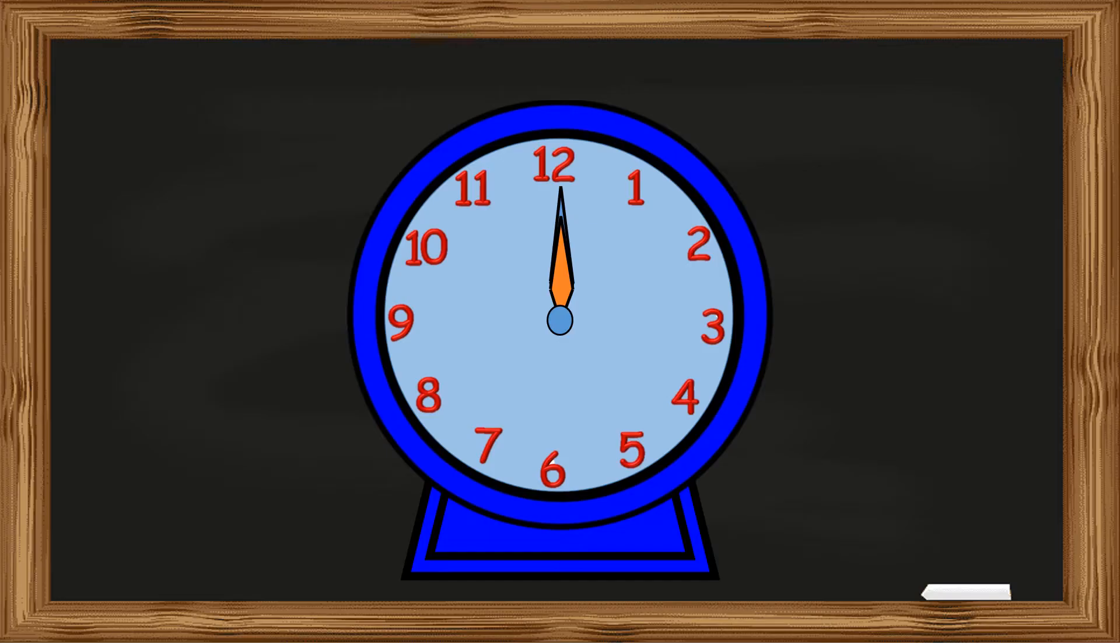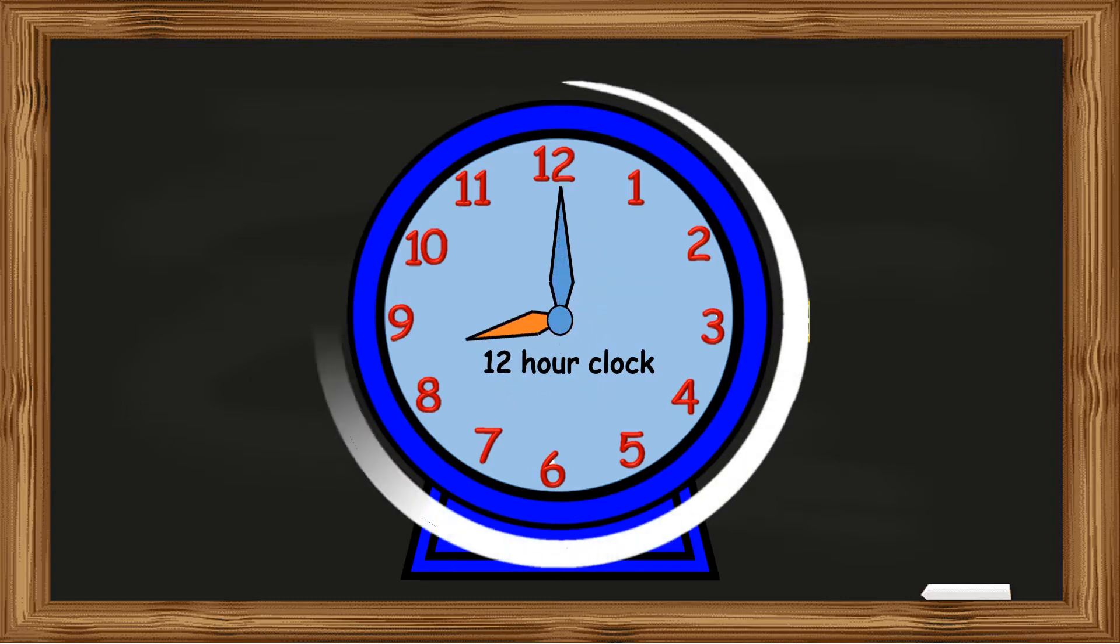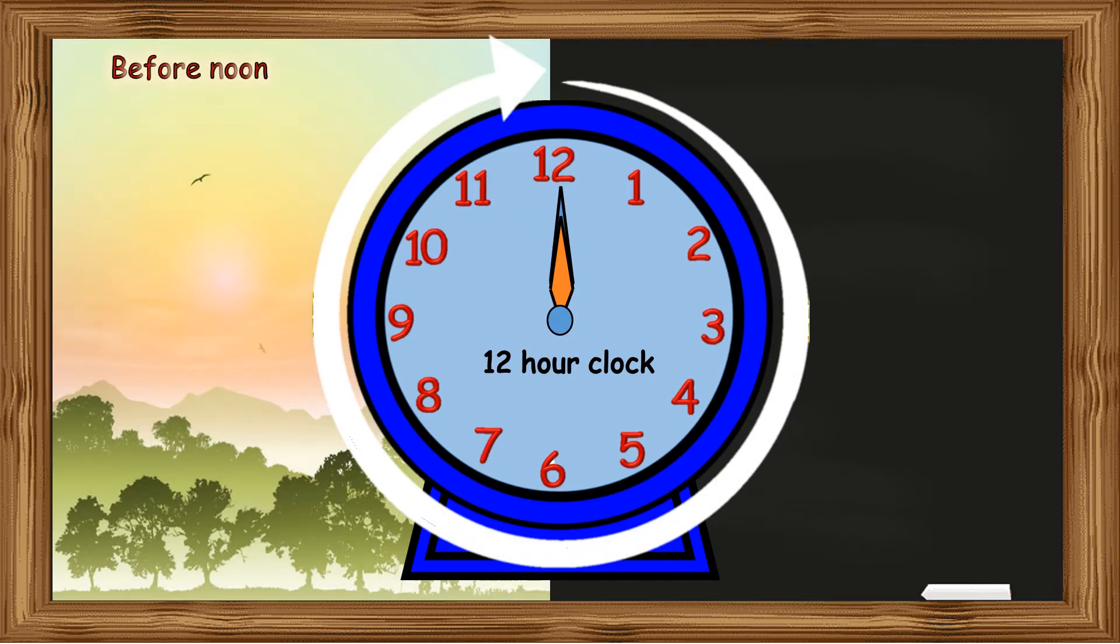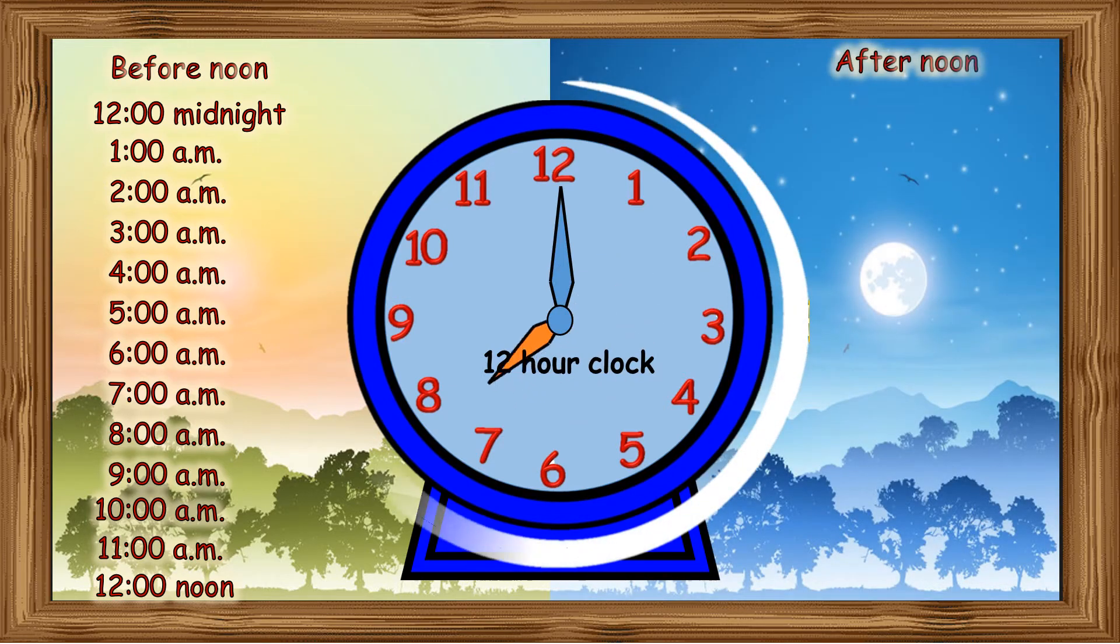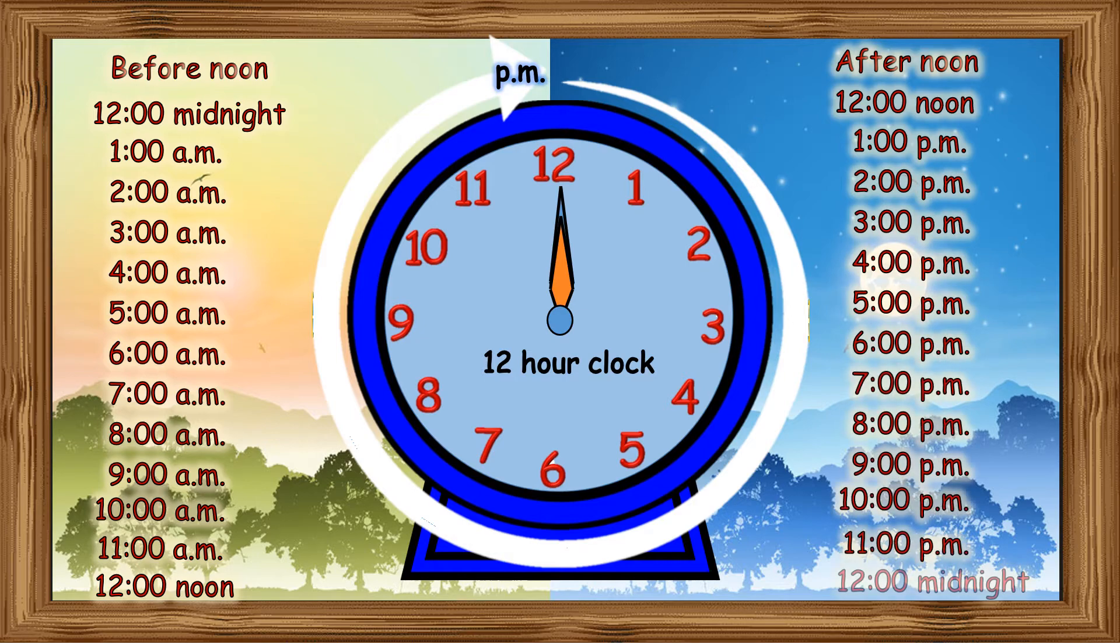You have already learned about the 12-hour clock where the 24 hours of a day are divided into 12 hours before noon written as AM from 12 midnight till 12 noon and 12 hours after noon written as PM from 12 noon to 12 midnight.